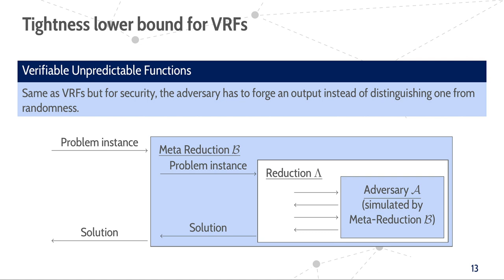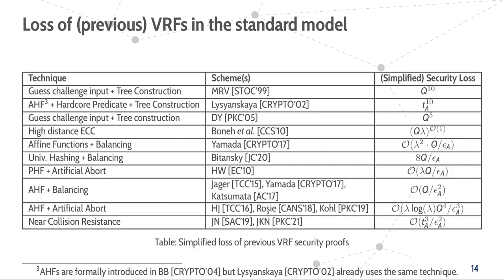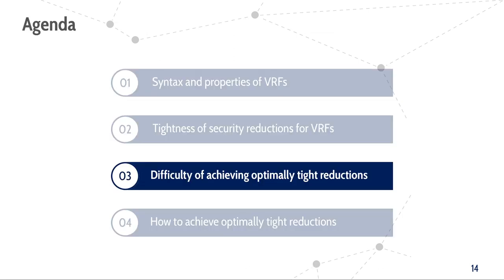Now that we have established the lower bound on the loss of VRFs, let us consider the loss of previous VRFs. This table shows the loss of most previous VRFs in the standard model, in some cases for reasonable parameterizations. Unfortunately, the loss in the last column of all these constructions is significantly worse than what is indicated by our bound.